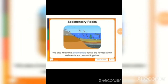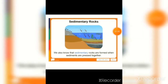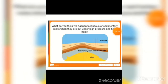Now, sedimentary rocks. We know that sedimentary rocks are formed when sediments are pressed together — meaning pressure acts on them. What do you think will happen to igneous or sedimentary rocks when they are put under high pressure and high heat? Means, jab heat aur pressure dono hi humare rocks par act karenge, toh kya hoga?